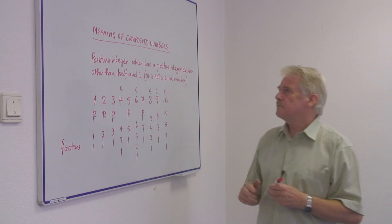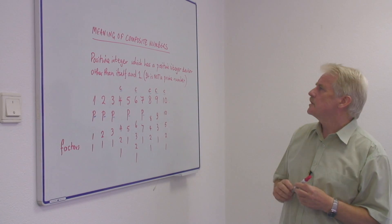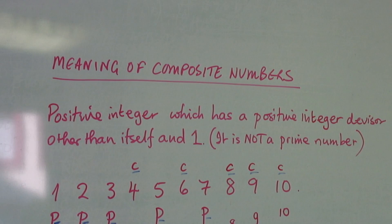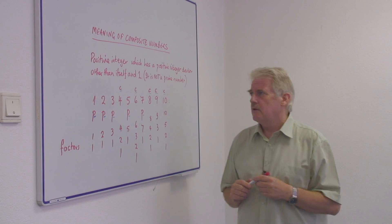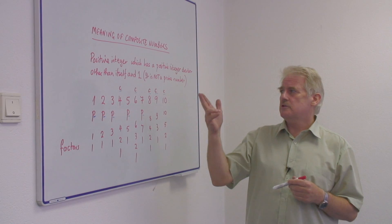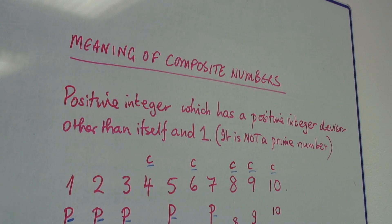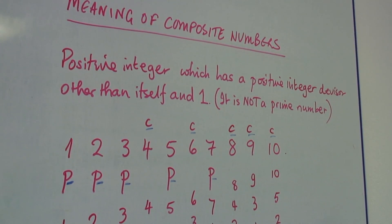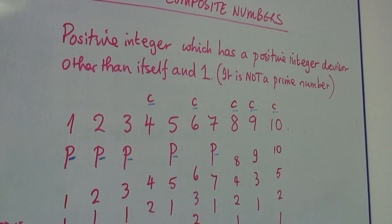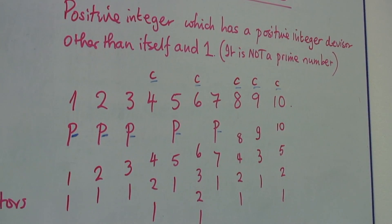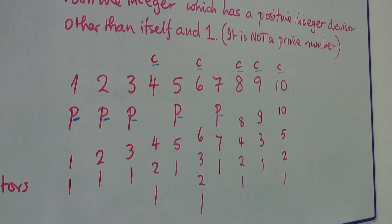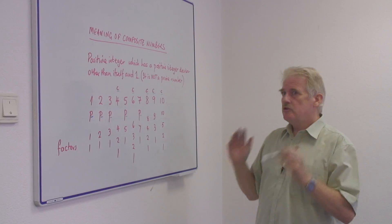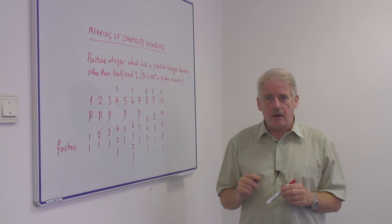Hi, I'm Steve Jones and I'm just going to explain the meaning of composite numbers. The definition is quite simple. It's a positive integer which has a positive integer divisor other than itself and one — which is a bit of a mouthful — and it's not a prime number.